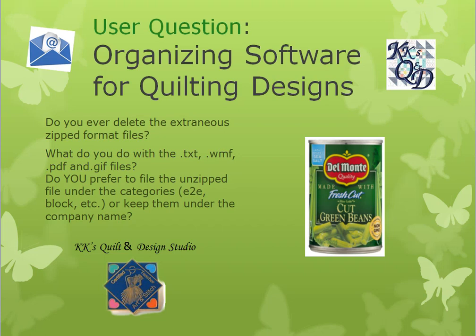As far as TXT files — those can be a text file or they can be a machine format file, depending on what they are. PDF files — a lot of times the designer will give you a PDF so you can preview the design without having to open up your viewing software, because quilting designs will only associate with certain software. So you can view it like we viewed in Art and Stitch — Art and Stitch will view all the machine types. But if you're not in Art and Stitch, your file explorer doesn't necessarily associate a file with a picture, so you wouldn't be able to view it.